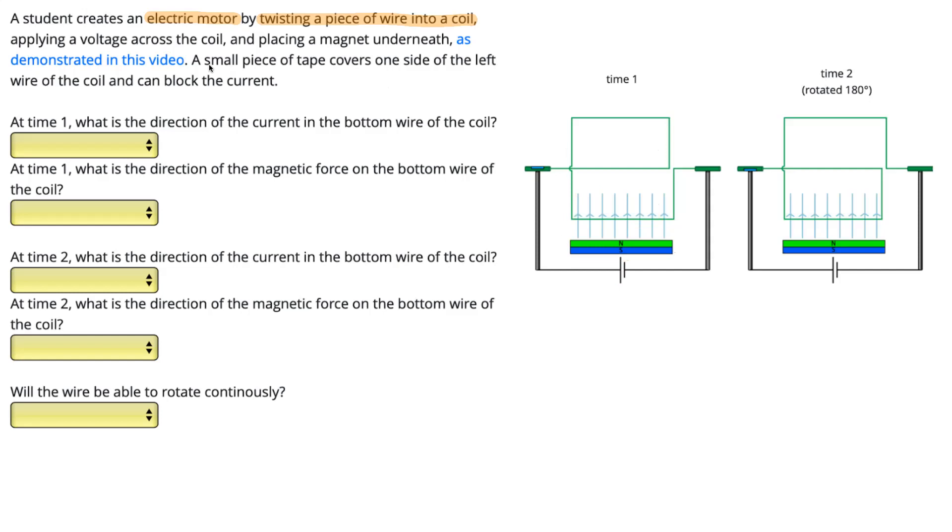There's a small piece of tape that covers one side of the left wire of the coil and can block the current. You can see that piece of tape shown in blue here and also here.